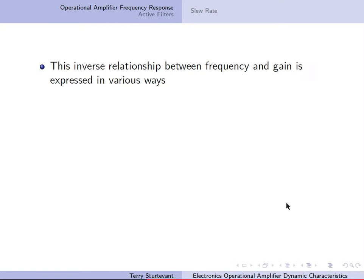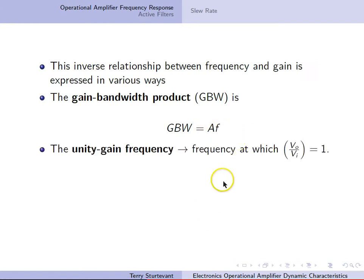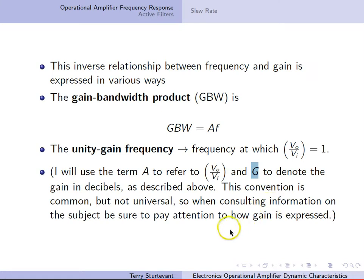The inverse relationship between frequency and gain can be expressed various ways. The gain-bandwidth product is the gain times the frequency, and the unity gain frequency is the frequency at which Vout over Vin equals 1. I will use the term A to refer to that ratio, and G to refer to the gain in decibels. This convention is common but not universal, so when you see information about gain, make sure you understand which way it's being expressed.